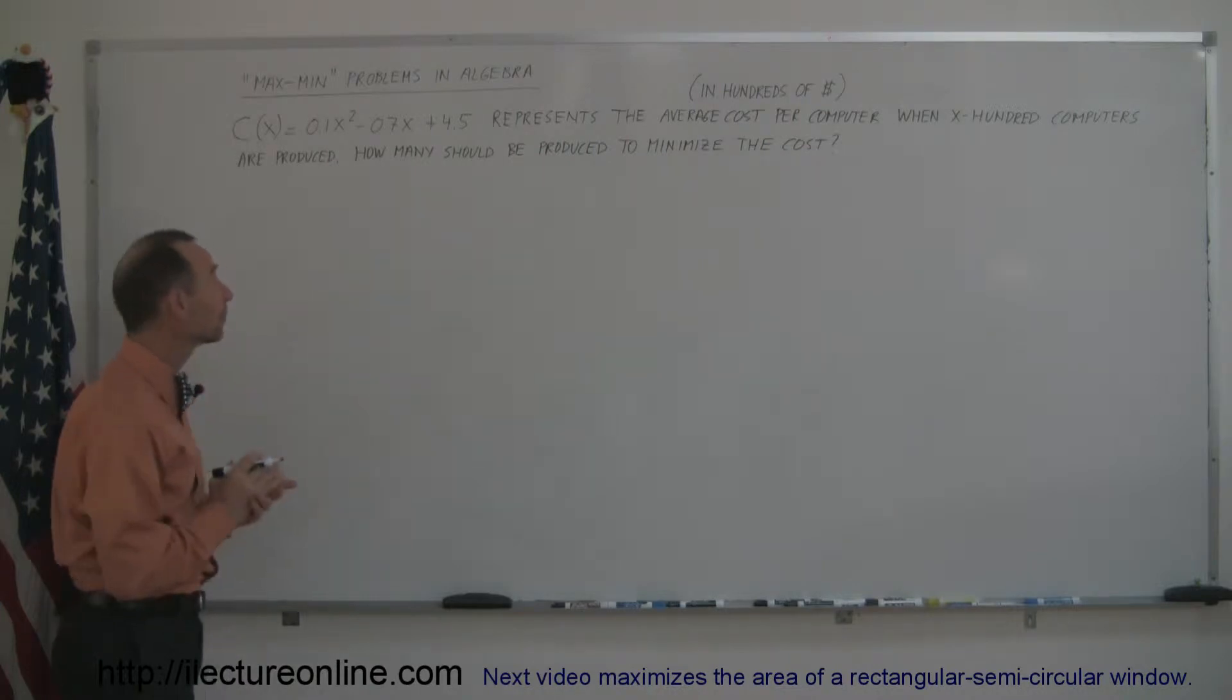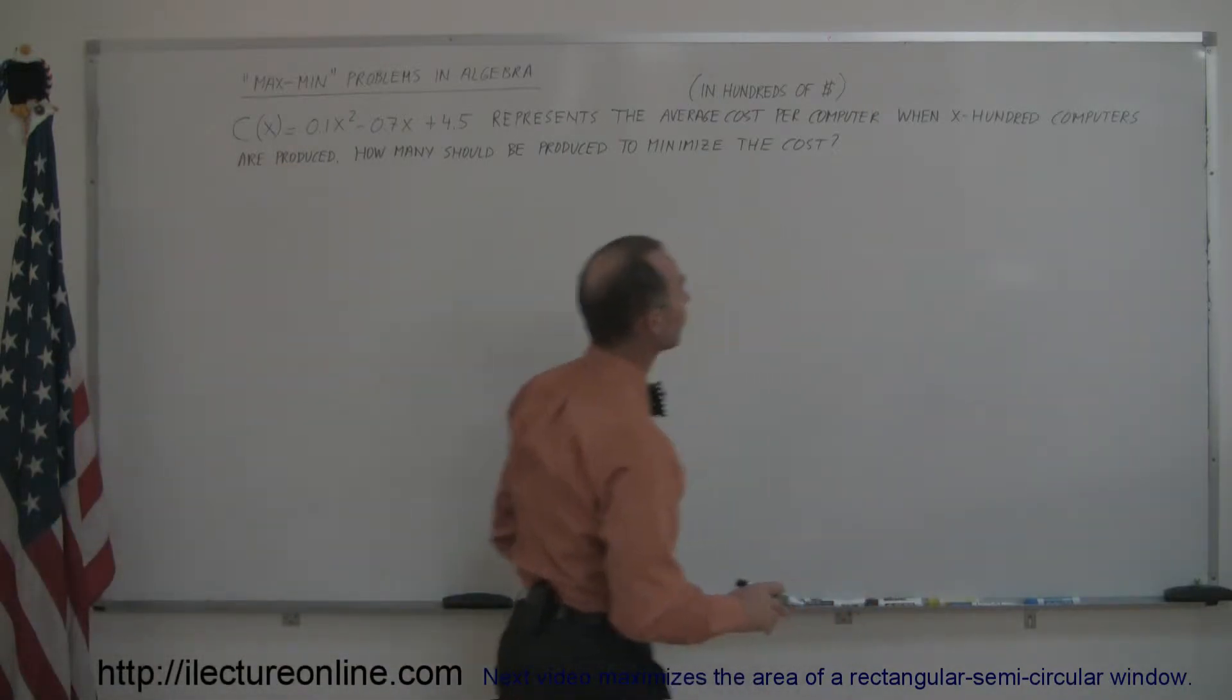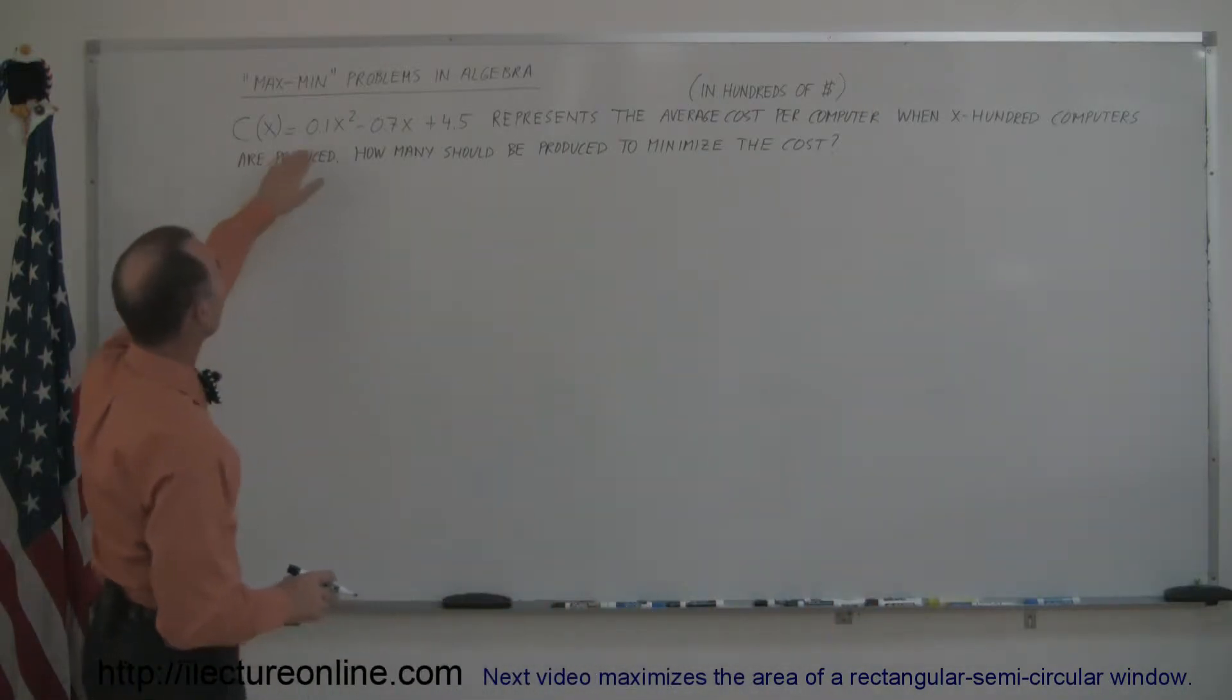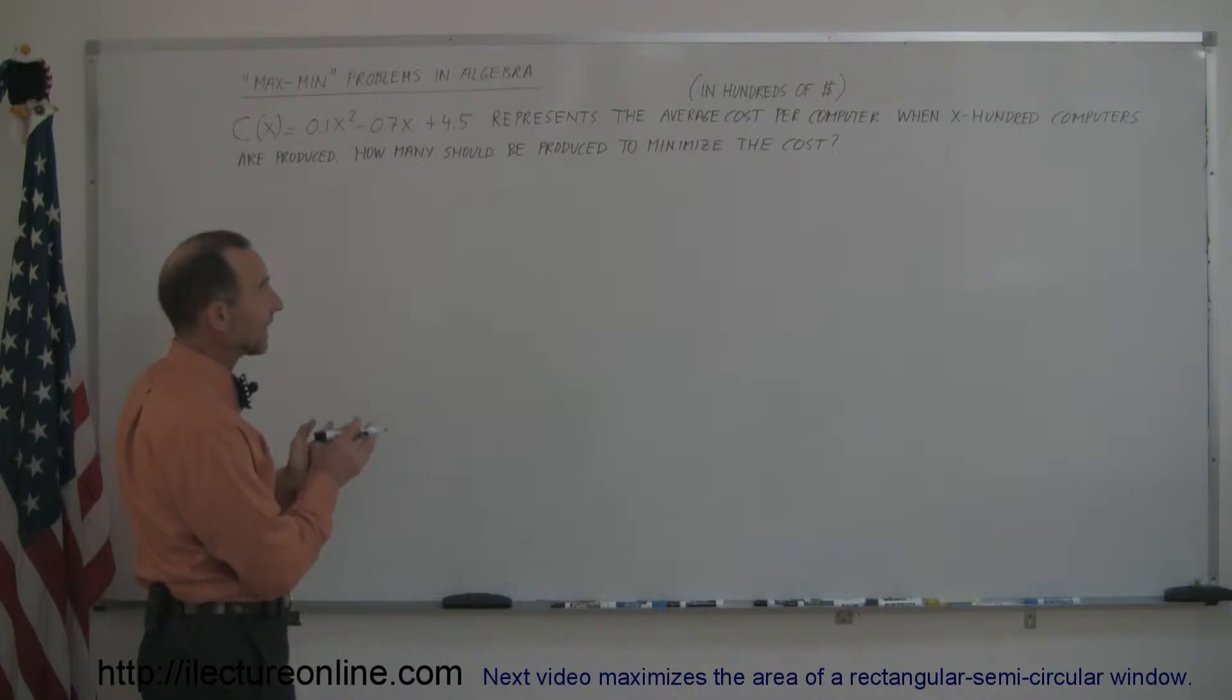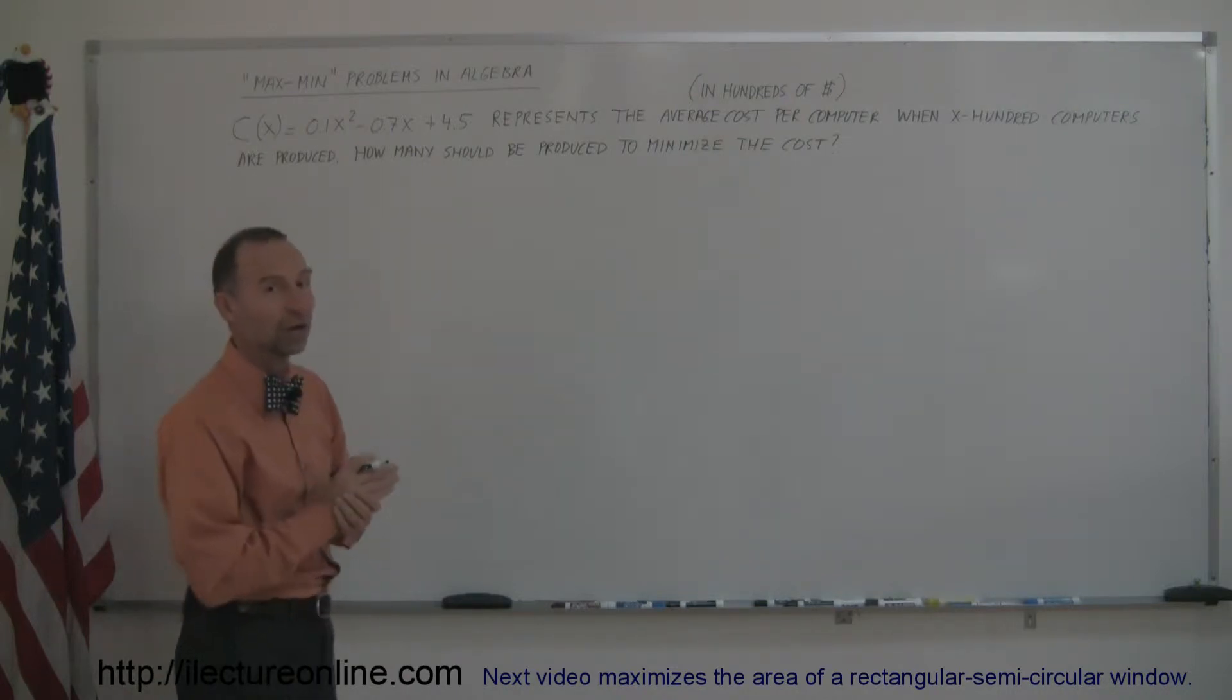So let's read this problem. Here it says that c as a function of x, x representing hundreds of computers, is equal to 0.1x squared minus 0.7x plus 4.5, and that equation represents the average cost per computer in hundreds of dollars when x hundred computers are produced. How many should be produced to minimize the cost?